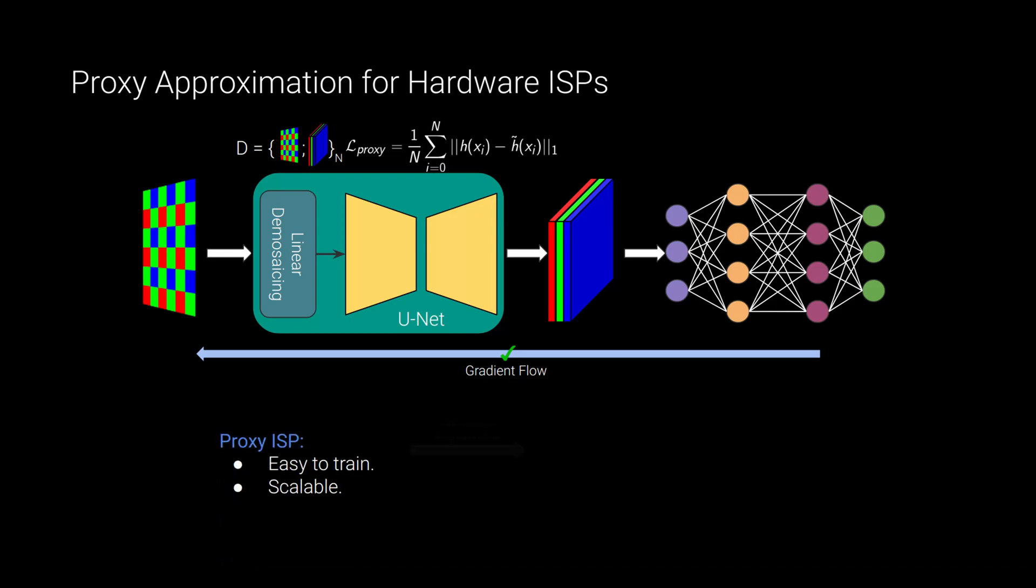We found that fine-tuning this proxy function with adversarial perturbations significantly improves the attack performance. We denote this new function as a local proxy ISP, which is then used as a gradient oracle for our attack.